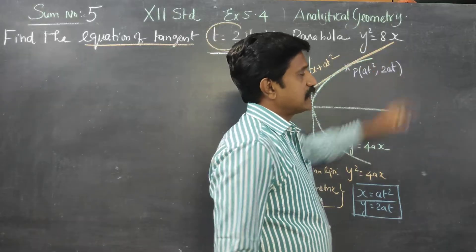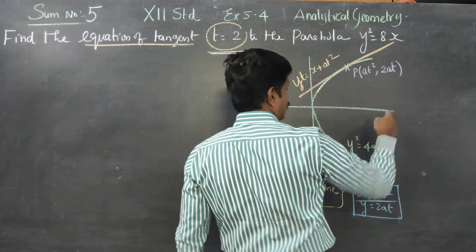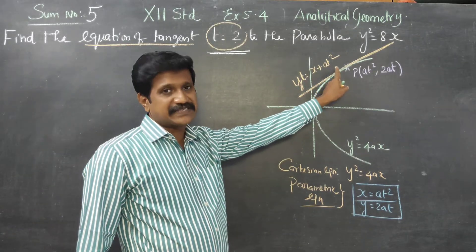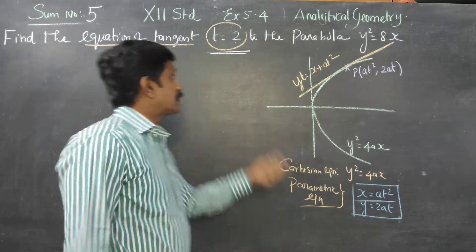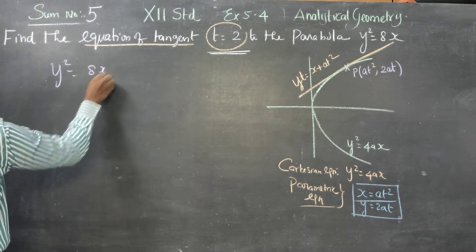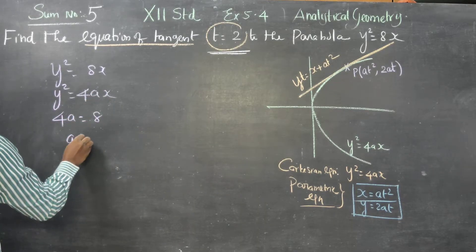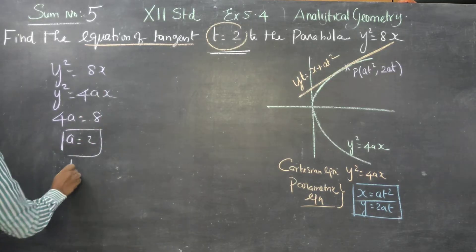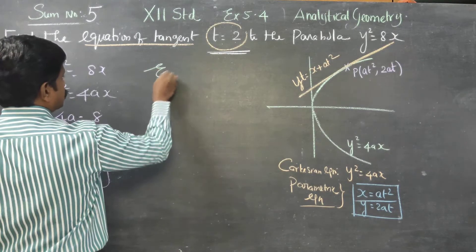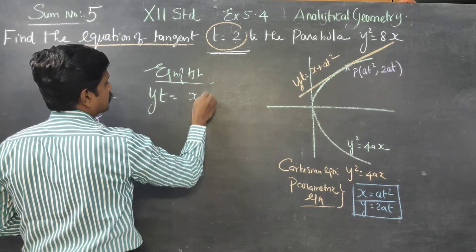The standard formula for the equation of a tangent to a parabola y square equal to 4ax in parametric form is: yt equal to x plus at square. Coming back to the problem, for y square equal to 8x, comparing with y square equal to 4ax gives 4a equal to 8, so a equal to 2. Already t is given as 2.